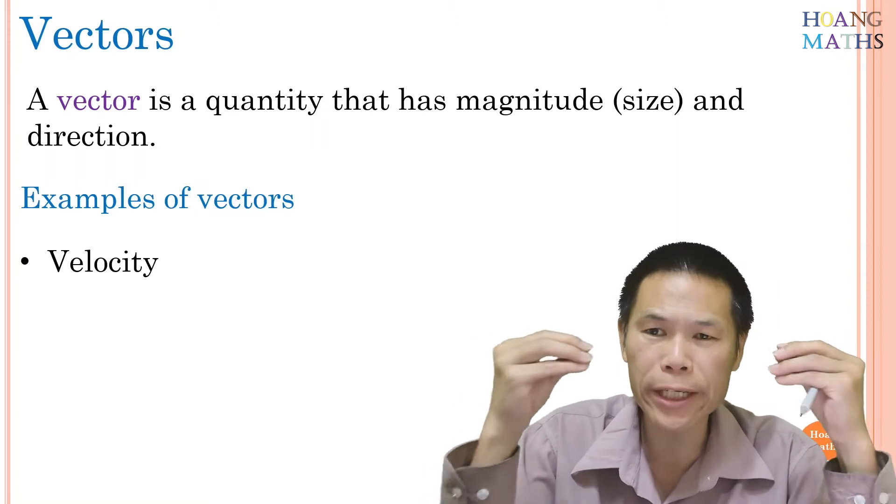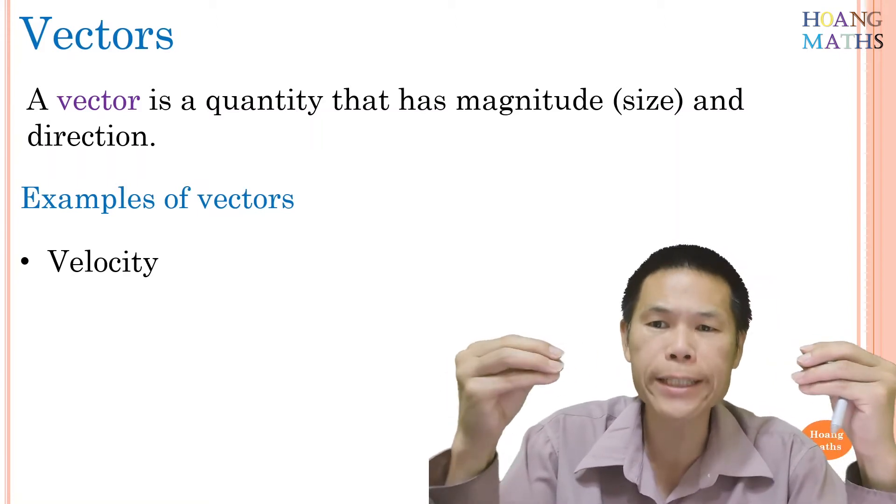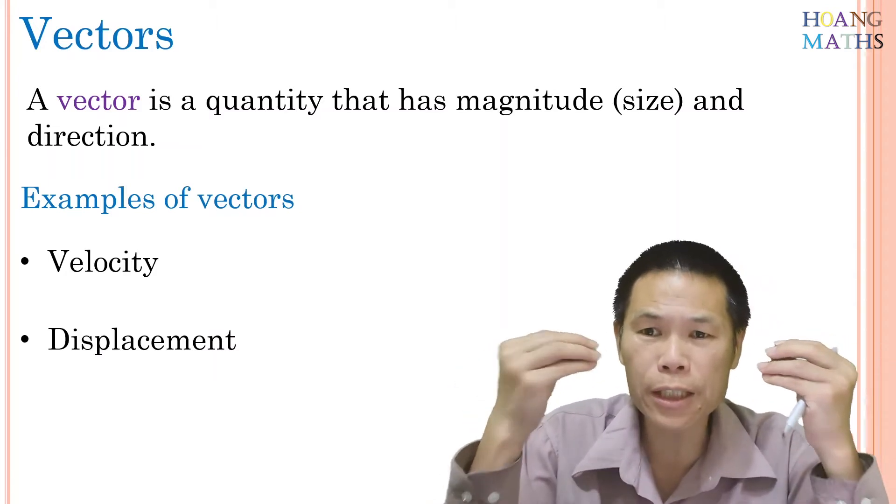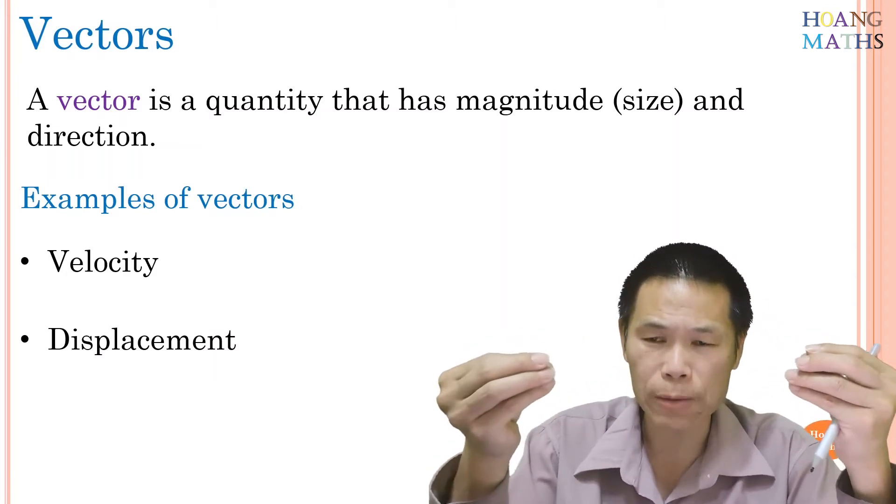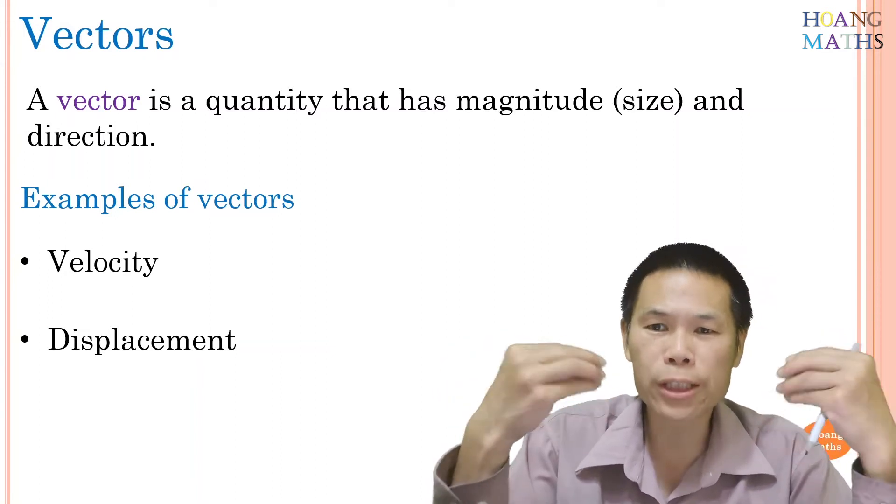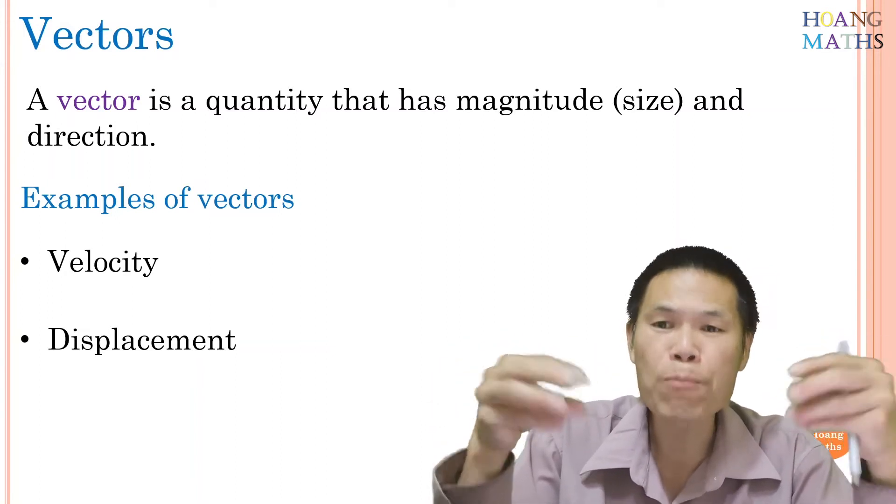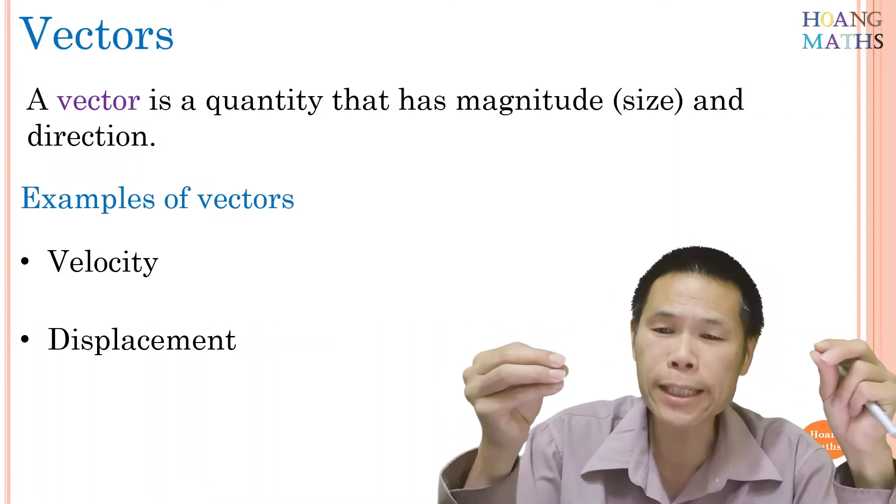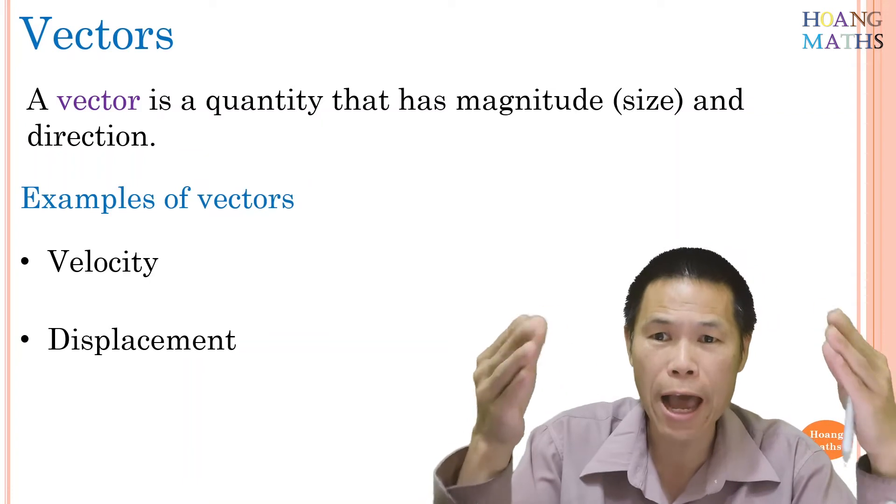Or a truck is heading toward east with a speed of 80 kilometers per hour. Displacement is distance with directions. For example, 80 kilometers north of Sydney or 60 kilometers west of Parramatta - these are displacement because it involves distance and directions, so there are vectors.